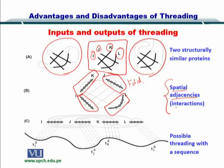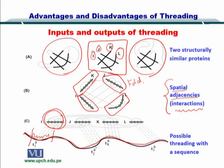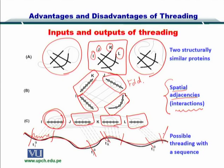The spatial adjacencies describe the interactions between the secondary structures. Then, given a sequence for which you don't know the structure, you can compare portions of this sequence to the secondary structures and declare each portion as taking up a specific structure. Similarly, one portion will take up J, another will take up K, and the last portion of the sequence will take up secondary structure L. In this way, you have predicted the structure for this sequence.